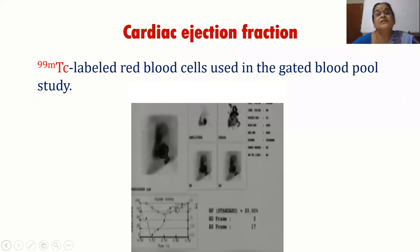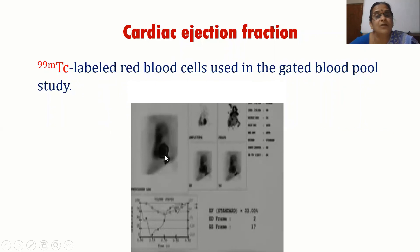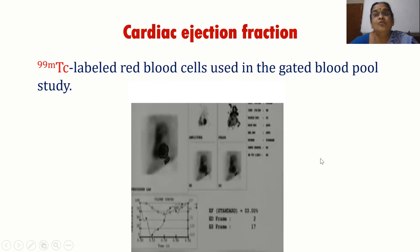An important example is the gated blood pool study using 99m technetium-labelled red blood cells, where the cardiac ejection fraction can be calculated. The end-diastolic and end-systolic volumes are drawn as regions of interest, and the volume is estimated using a graph. Quantification determines how normal the cardiac function is — specifically the left ventricular cardiac ejection fraction.